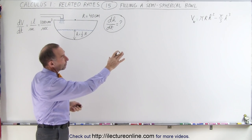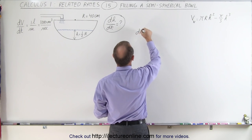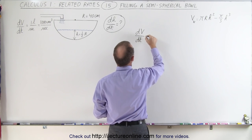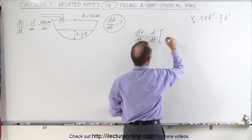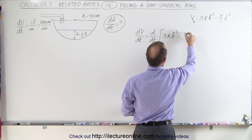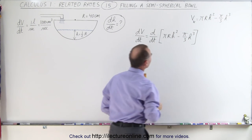Let's now go ahead and take the derivative with respect to time of that equation. That means that the d dt of the volume is going to be equal to the d dt of the right side of that equation. So I'll write it like this, pi r h squared minus pi over 3 times h cubed. Alright, let's go ahead and take the derivative of the right side now.